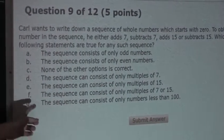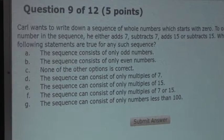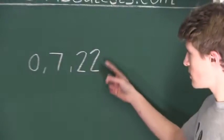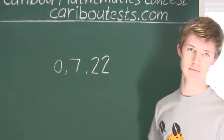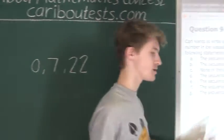And finally, option G. The sequence can consist of only numbers less than 100. Well, if we wanted to, we could just keep on adding 15, adding 15, adding 15 until we get over 100. So therefore, option G is also wrong.